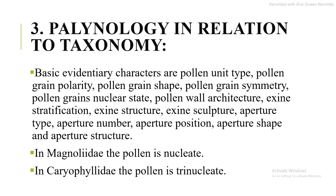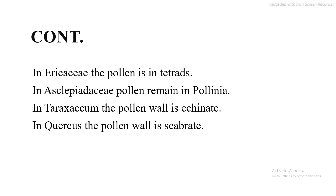Third, palynology in relation to plant taxonomy. Basic evidentiary factors are pollen unit type, pollen grain polarity, pollen grain shape, pollen grain symmetry, pollen grain nuclear state, pollen wall architecture, exine stratification, exine structure, exine sculpture, aperture type, aperture number, aperture position, aperture shape, and pore texture. In Magnoliidae the pollen is uninucleate; in Caryophyllidae the pollen is trinucleate; in Asteraceae the pollen is in tetrads; in Asclepiadaceae pollen remains in pollinia. In Quercus the pollen wall is verrucate.